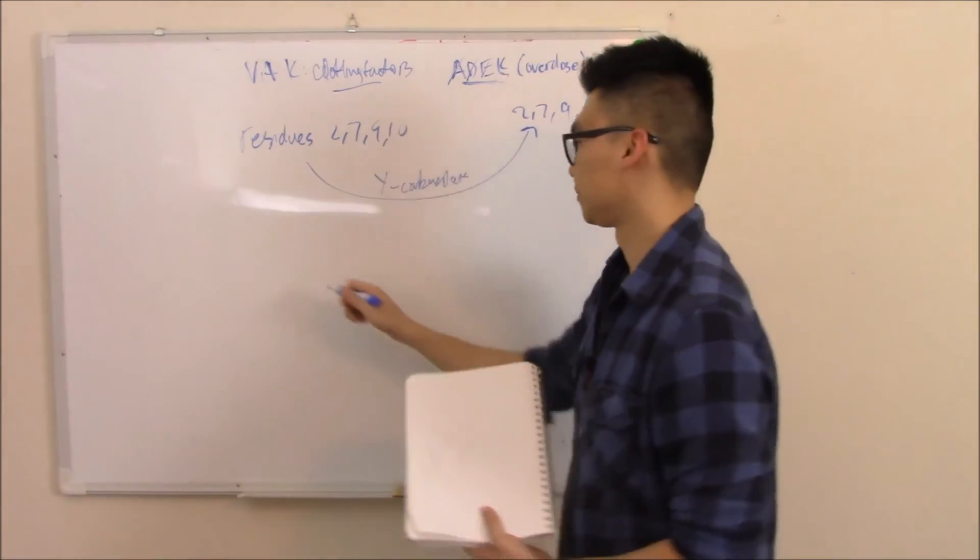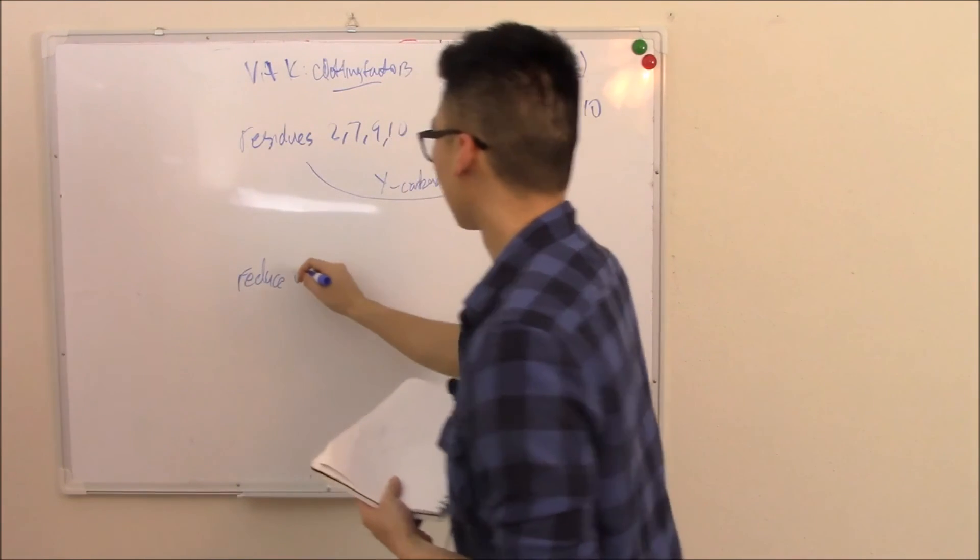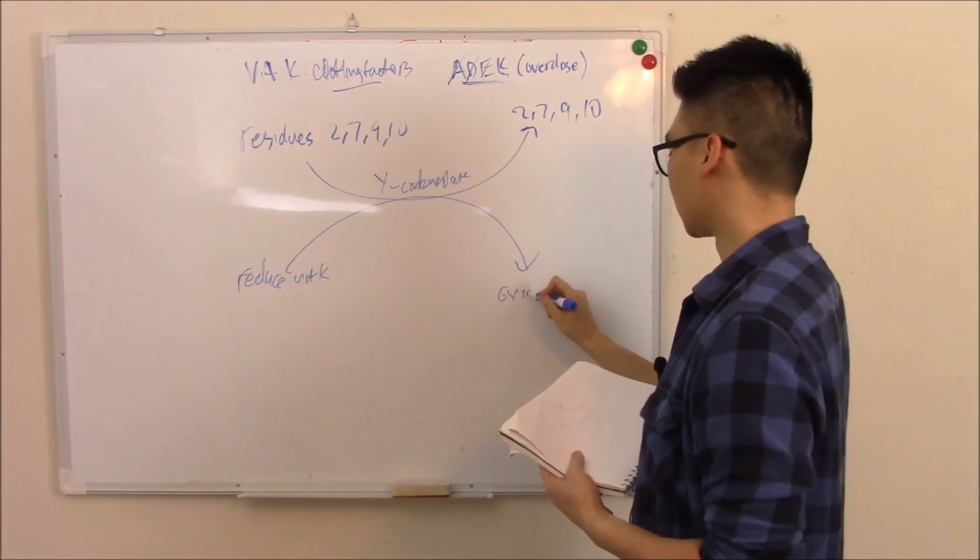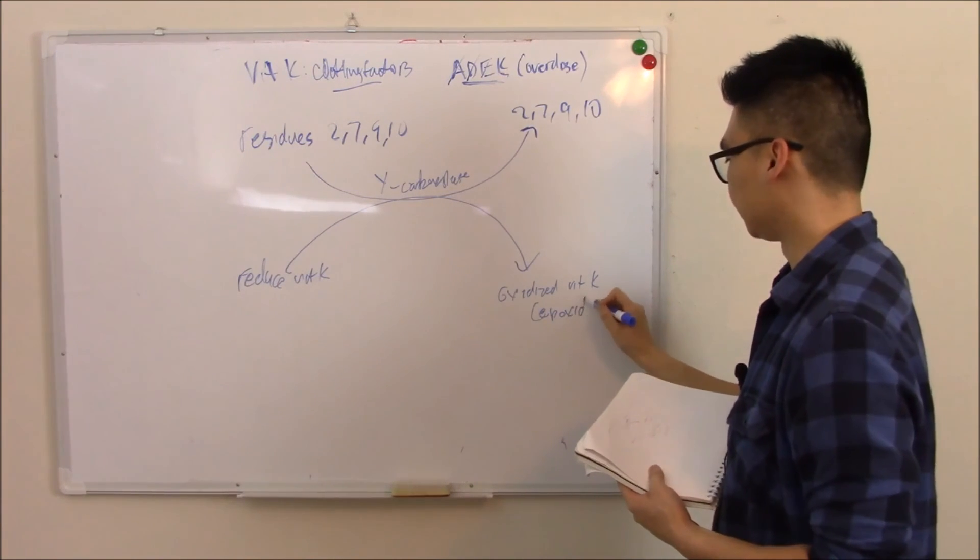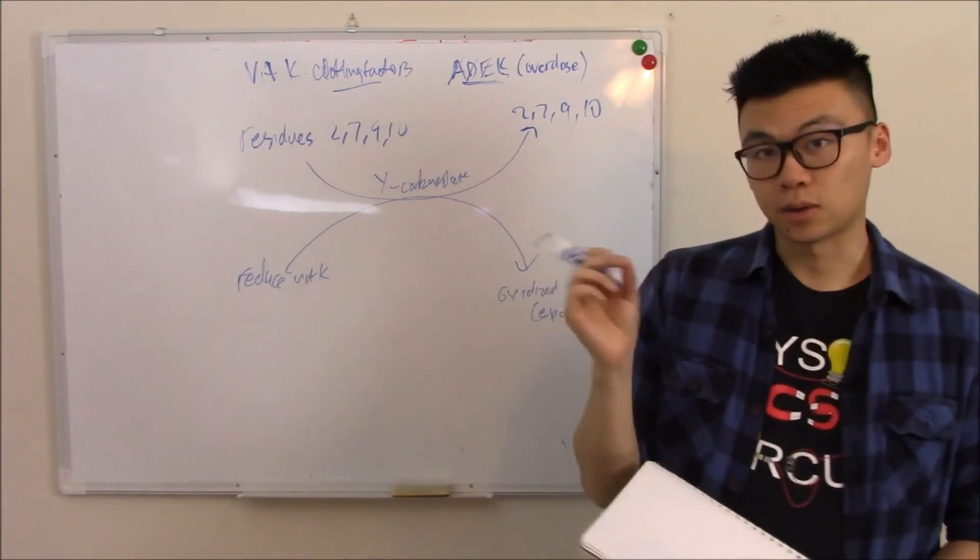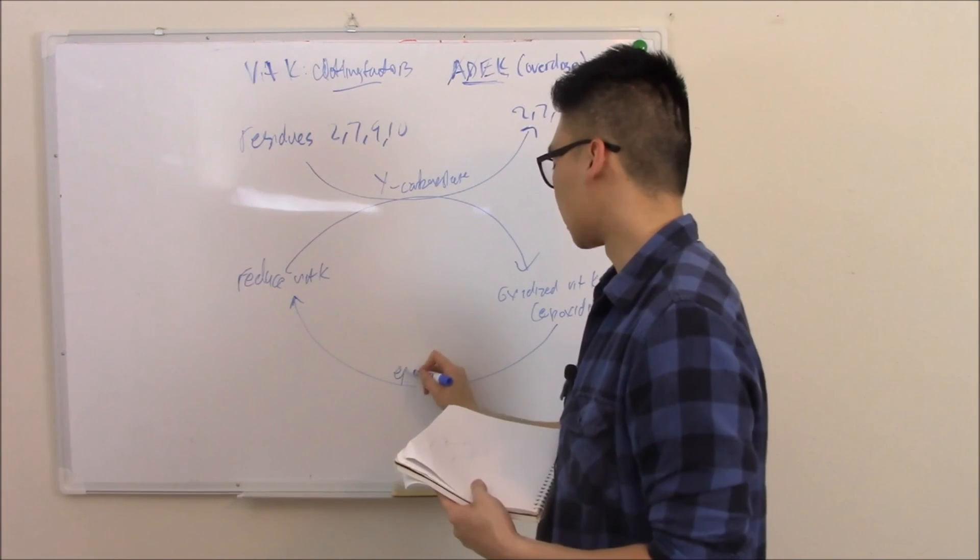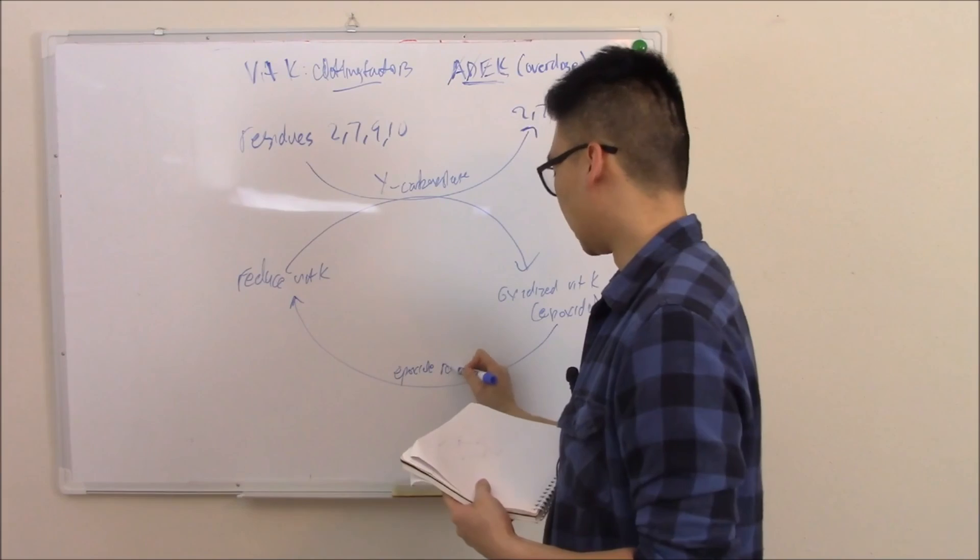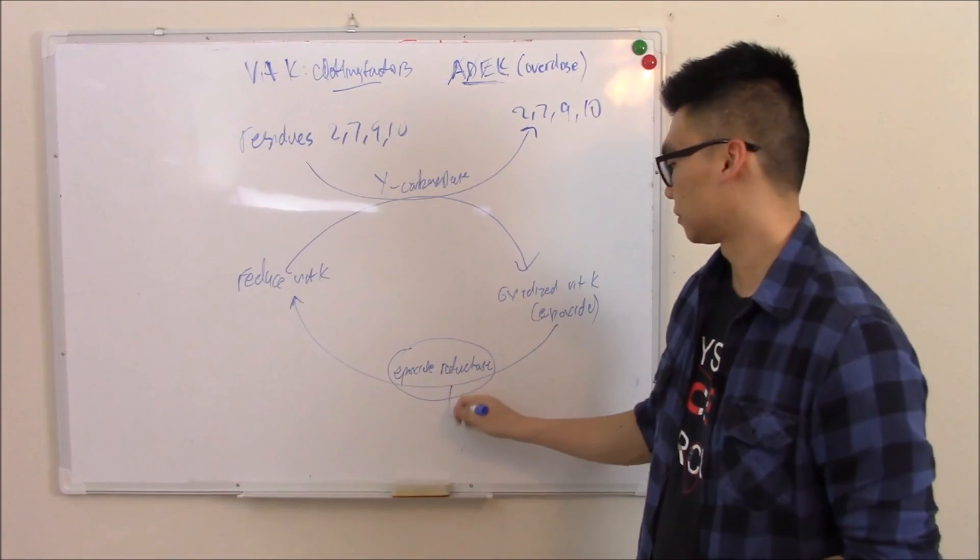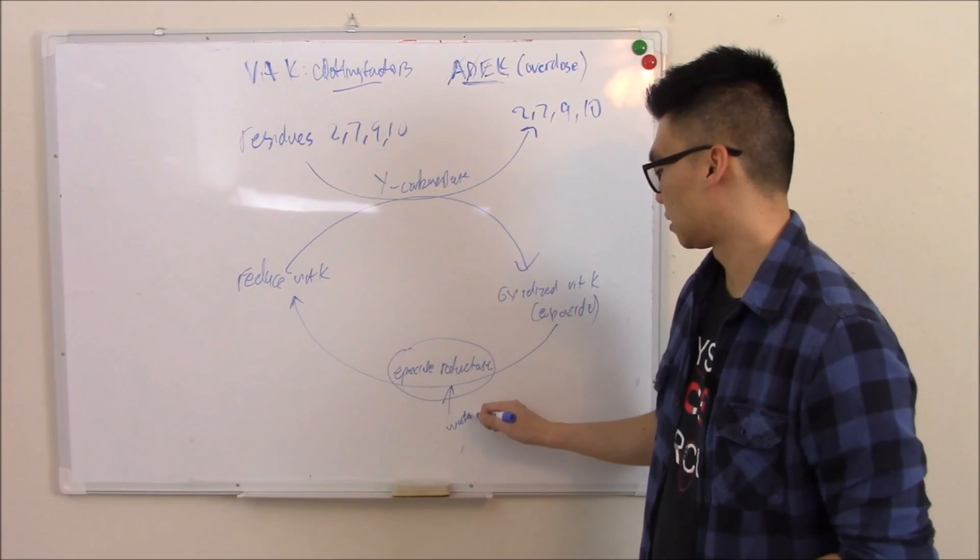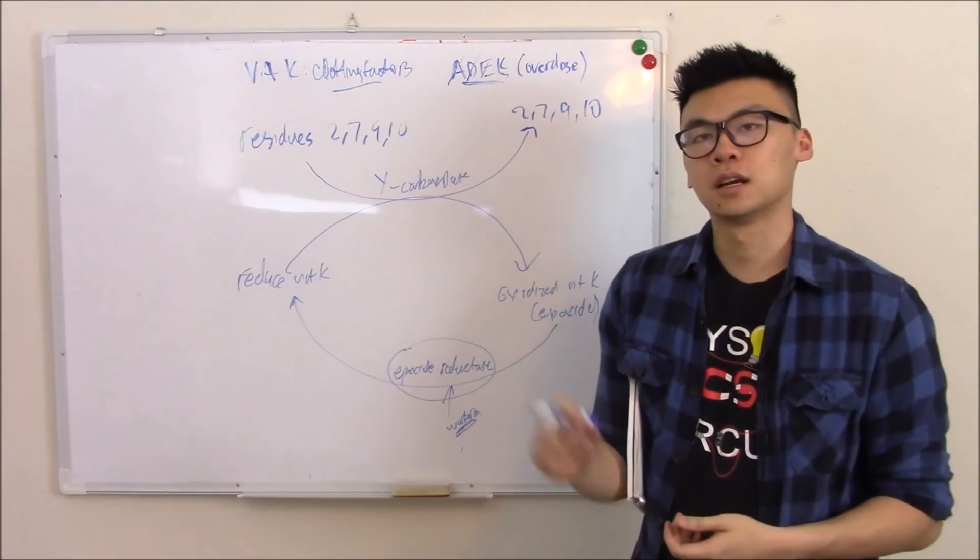Well, you obviously need vitamin K to get in here. And it gets in here as reduced vitamin K, lends a helping hand, and becomes oxidized vitamin K, sometimes just known as epoxide. Vitamin K is a valuable commodity, so we want to recycle that. And the thing that does that is epoxide reductase, or just vitamin K reductase. That's the thing that warfarin blocks. And that is how we make our 2, 7, 9, 10 clotting factors via vitamin K.